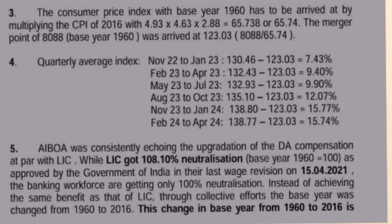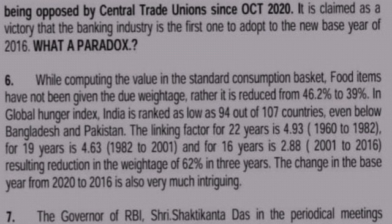AIBA was consistently echoing the demand for DA compensation at par with LIC. While LIC got 108.10 percent neutralization with base year 1960 equal to 100 as approved by the Government of India in their last wage revision on 15 April 2021, the banking workforce was getting only 100 percent neutralization. Through collective efforts, the base year was changed from 1960 to 2016.